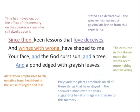On to the final stanza. The words 'since then' show that time has now moved on, and yet the effect of the memory on the speaker is still very significant — he still dwells upon it. 'Since then, keen lessons that love deceives and rings with wrong have shaped to me your face.' The phrase 'love deceives' is stated as a declarative, suggesting he believes this is fact — what he has learned about love and will carry forward into all future relationships. The alliteration in 'rings with wrong' emphasises the harsh, negative tone, heightening the sense of regret and loss.